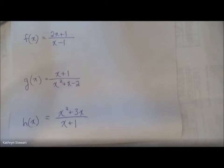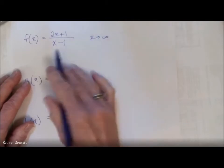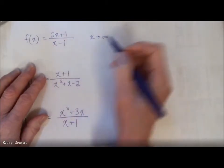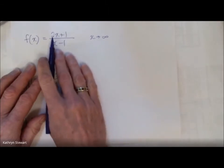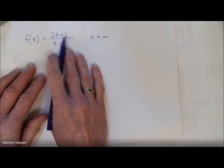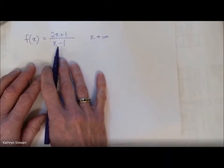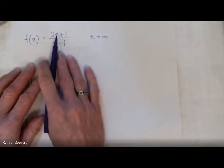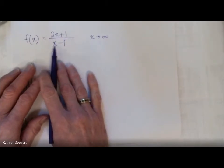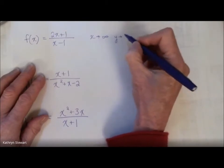I imagine you looked at end behavior to figure this out. So let's go ahead and look at end behavior. In this one, as x is getting big, if we imagine plugging in a really big number, let's say like a hundred, that's two hundred plus one. I'm not going to worry about the plus one — it's about two hundred divided by about one hundred. That's about two. If I plug in a thousand for x, that's about two thousand divided by about one thousand — that's even closer to two. So to find end behavior, we plug in bigger and bigger numbers and see the trend.